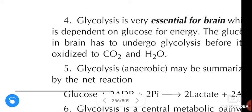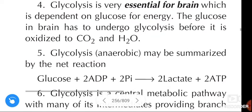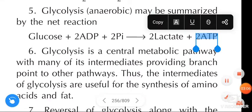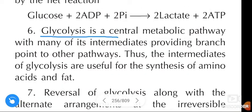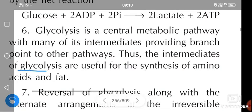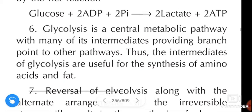The anaerobic reaction of glycolysis may be summarized by the net reaction: glucose + 2 ADP + 2 inorganic phosphate gives 2 lactate + 2 ATP. Glycolysis is a central metabolic pathway with many of its intermediaries providing branch points to other pathways. The intermediaries of glycolysis are useful for the synthesis of amino acids and fat.